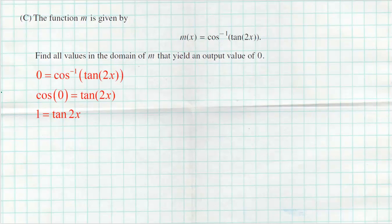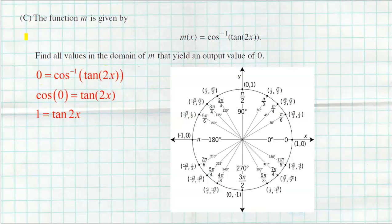To undo a cosine inverse I use a regular cosine, so cosine of zero equals tangent of 2x — that's the old switcheroo. Cosine of zero equals one from the unit circle, giving one equals tangent of 2x. Now, two x is an angle, so I first need to figure out what angle makes this true. Tangent equals one at pi over 4. Since tangent repeats every pi, 2x equals pi over 4 plus pi times n, where n is any integer.